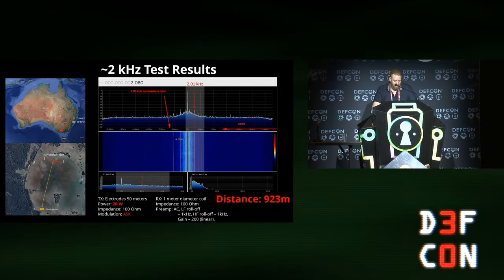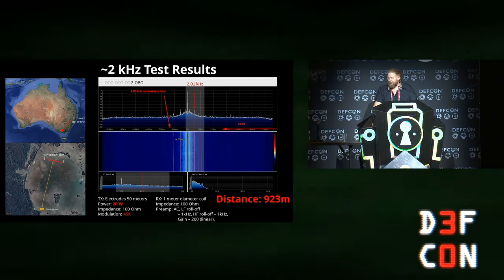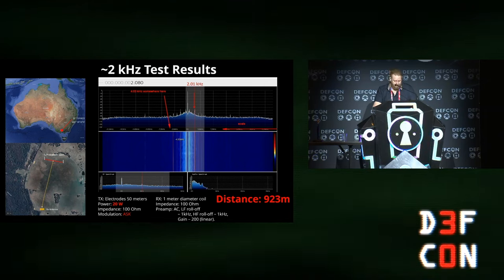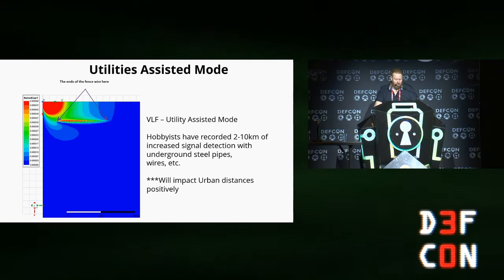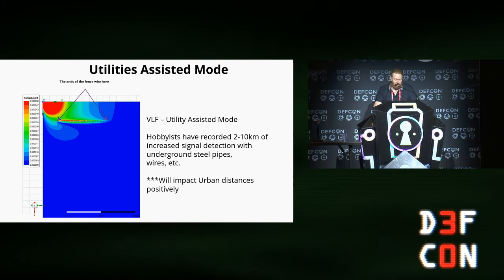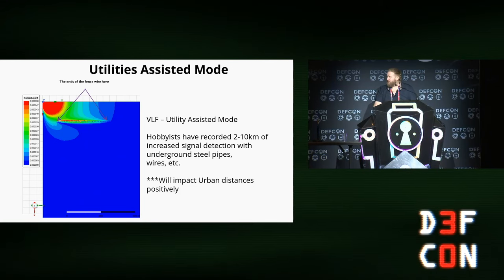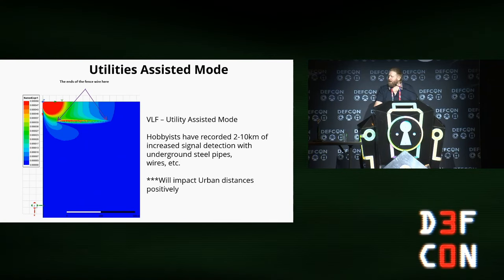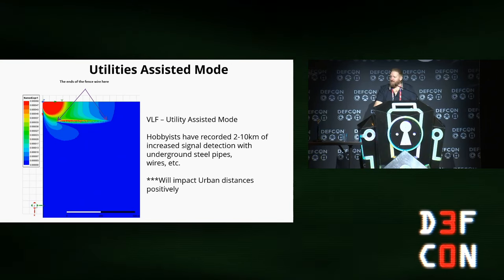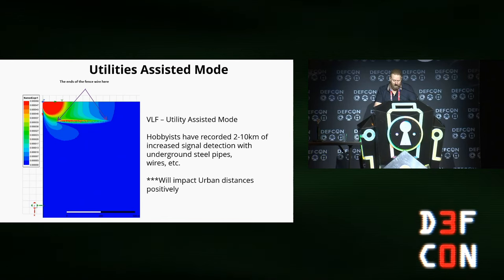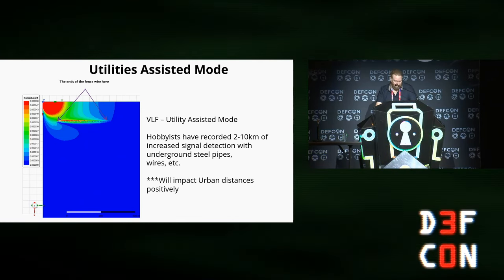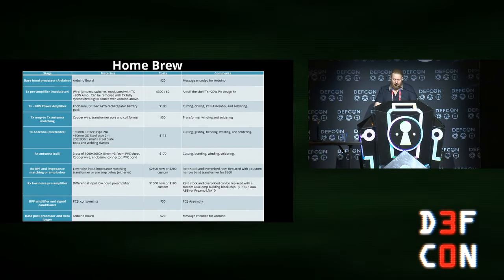Here are the field tests that we did in Australia. TX electrodes 50 meters apart. We only used 20 watts of power because we were in the middle of nowhere. We got to 923 meters in distance. That was with basic ASK modulation. Something interesting that did pop up was this result here. On closer analysis, you'll see that red line going across from east to west. That was actually some fencing wire underground. You'll notice the signal being a H-field magnetic field actually transmitted along the wire. The beauty of that is you can actually get longer distances by using something called utilities-assisted mode. Hobbyists are using underground pipes in the UK to get longer signals. So in other words, if you're using it in an urban setting, you'll get further distances.